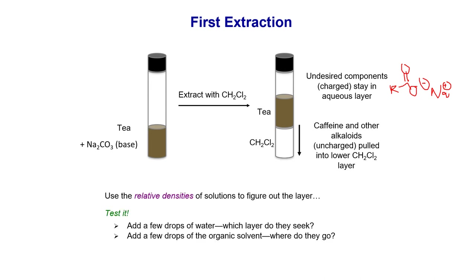Take a drop of water and put it into the centrifuge tube. If the drop of water stays at the top, you know the top is the aqueous layer. If you take a drop of the organic layer and put it in a test tube and it goes to the bottom, then the bottom layer is the organic solvent layer. You can also look up the density of dichloromethane — the more dense solution will stay at the bottom — and compare densities to determine which layer is which.